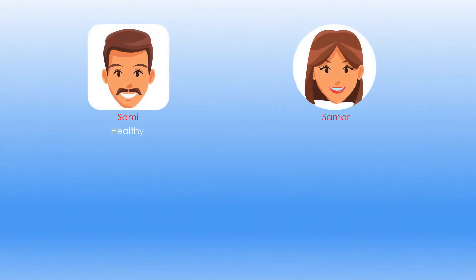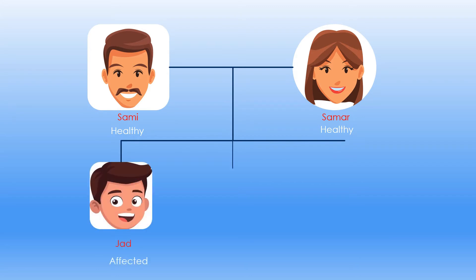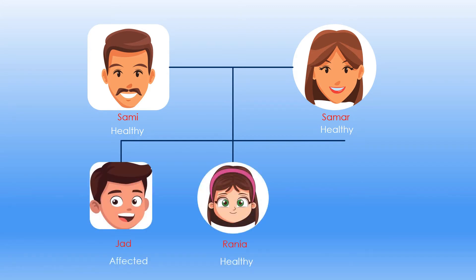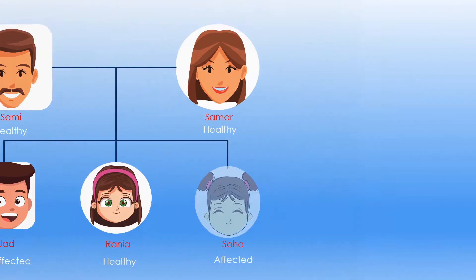Sammy and Somare are a healthy couple with three children: Jad, an affected boy; Rania, a healthy girl; and Saha, an affected girl.